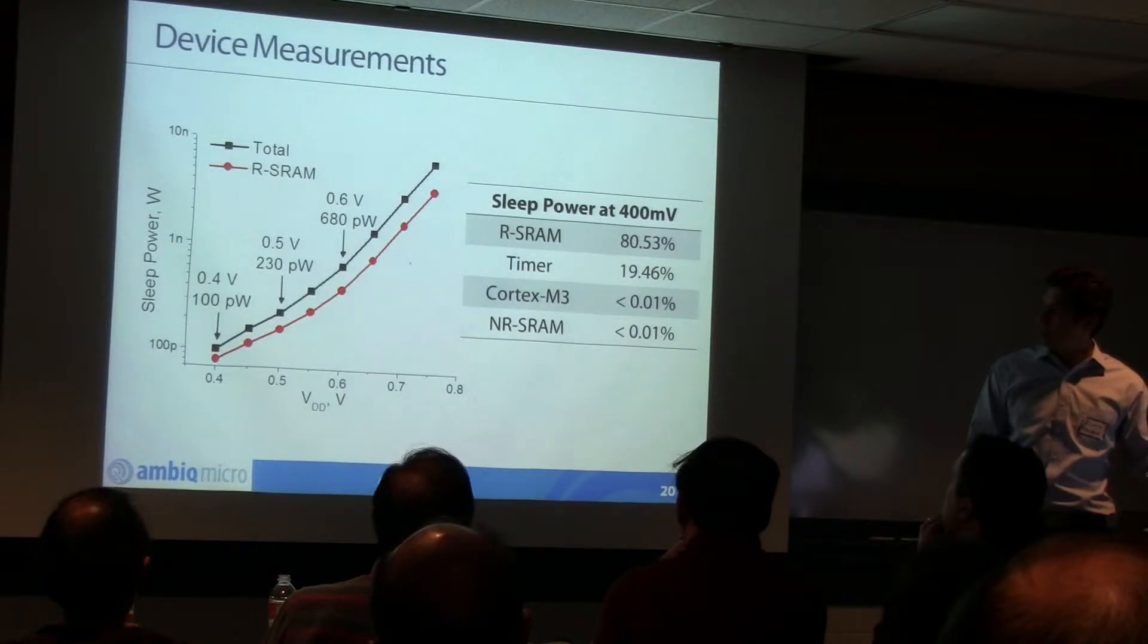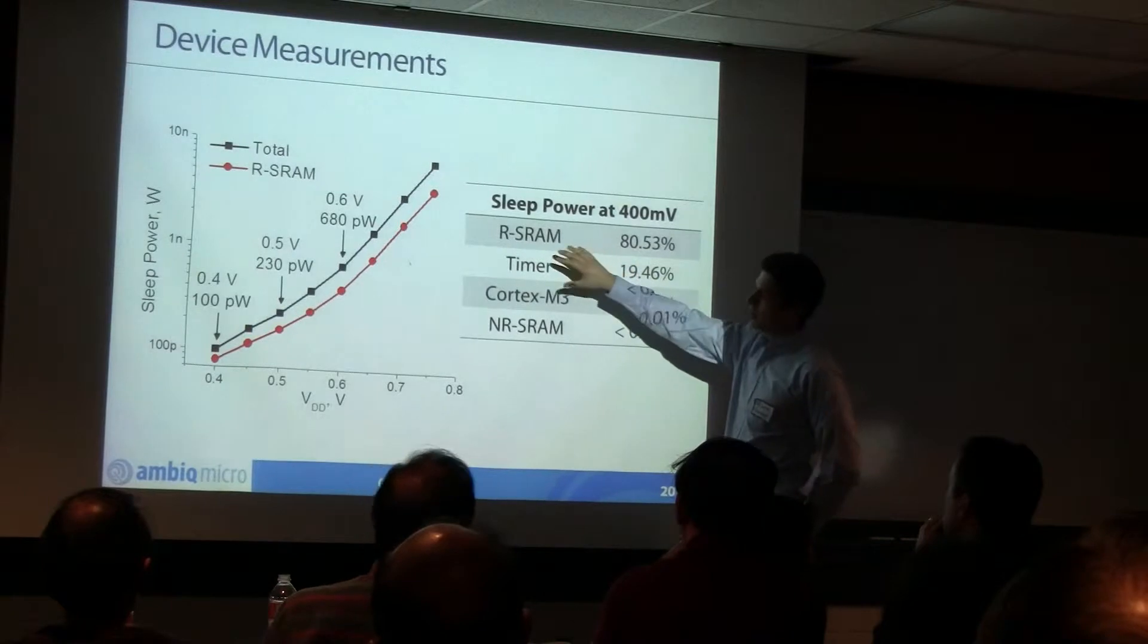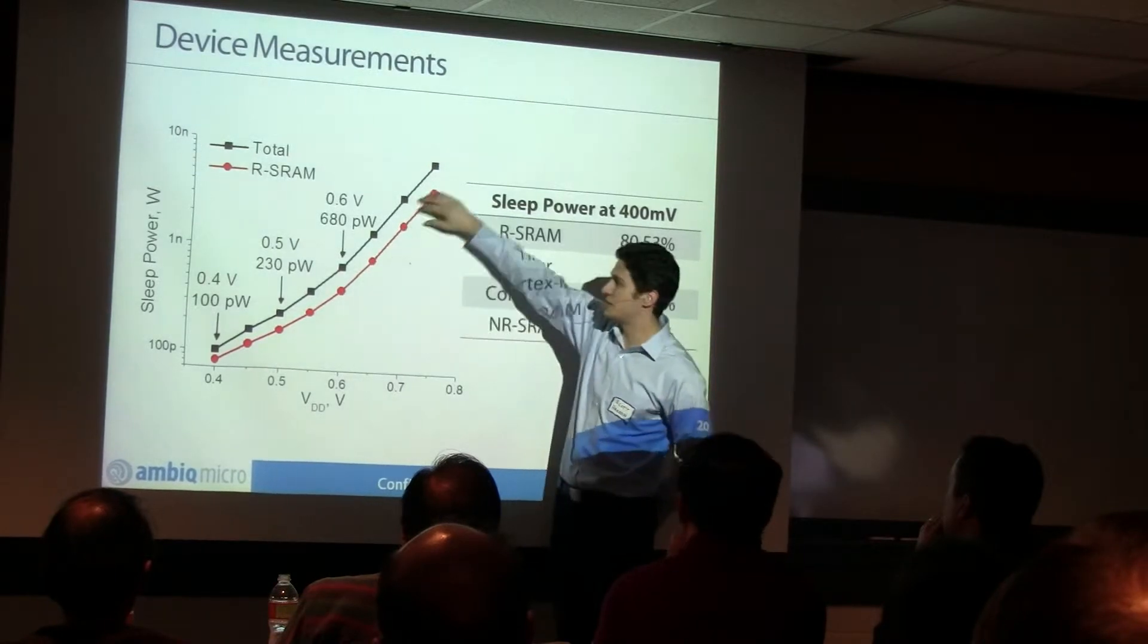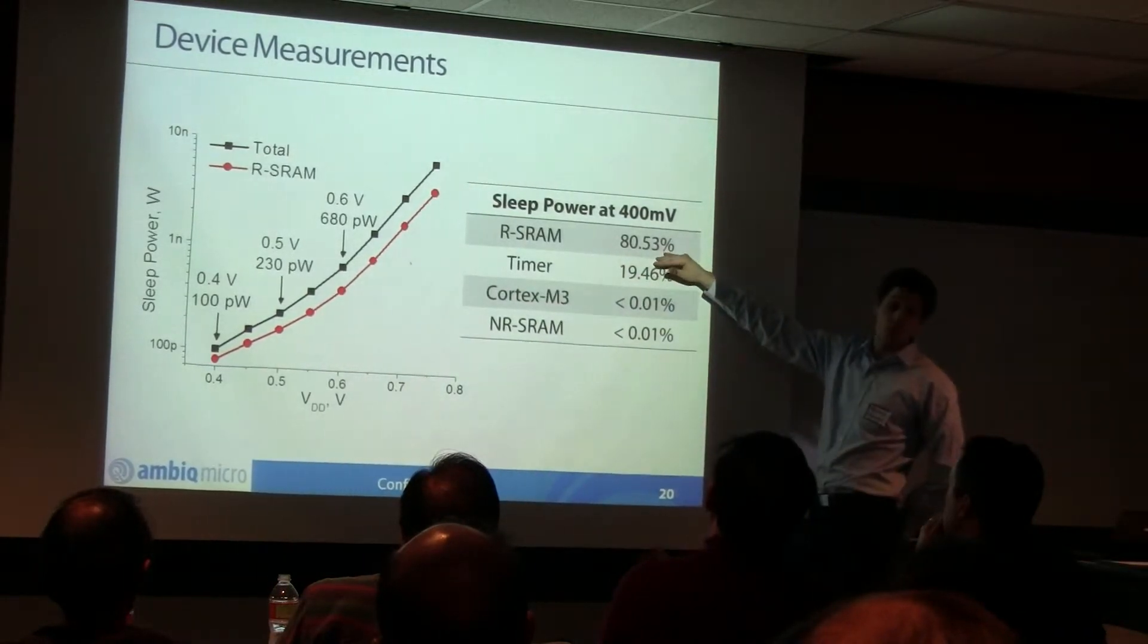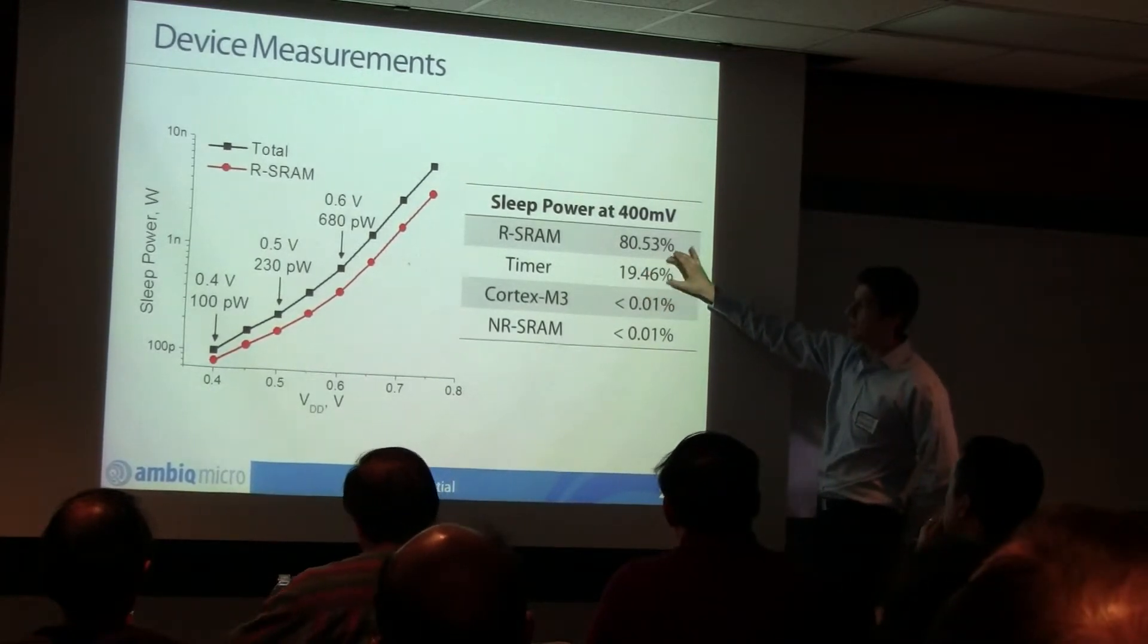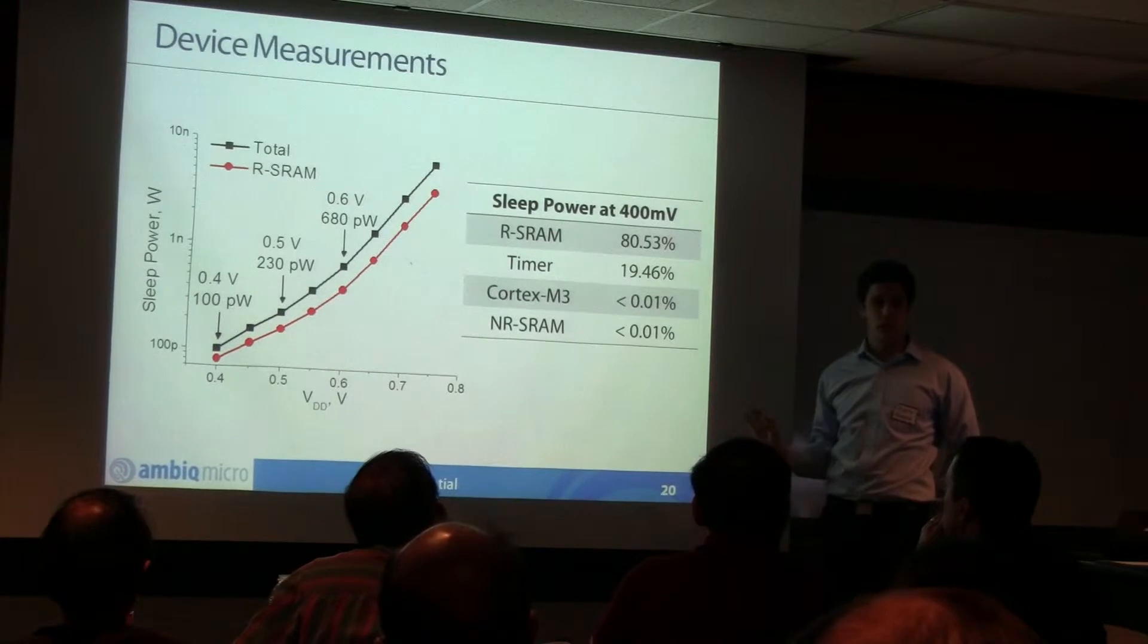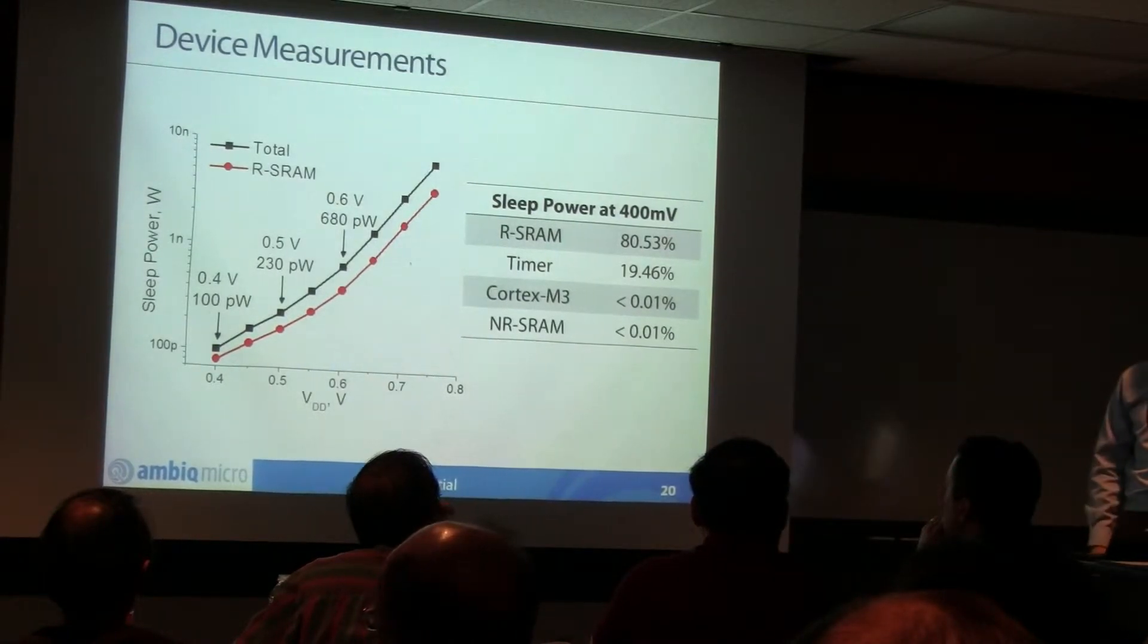We have memory measurements, sleep measurements as well. Again, this is the same pair that shows the total leakage versus voltage, as well as just the retentive SRAM. And you can see that that retentive SRAM is a big portion of it. It's about 80% of the total power down there. The timer is about 20%. We have some unique architecture there that make that work. Interestingly, the Cortex M3 is virtually nothing. 0.01%. It's absolutely minimal there, because of a lot of the power gating.